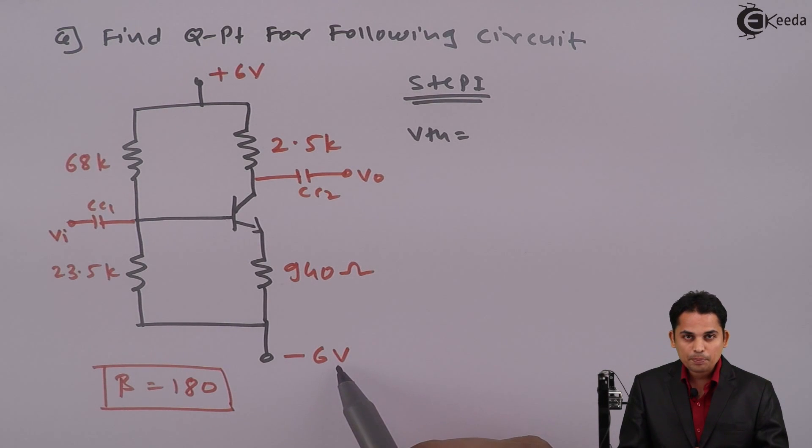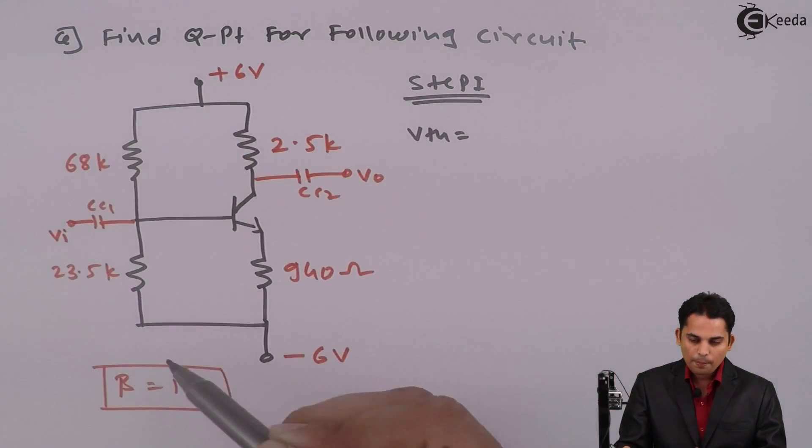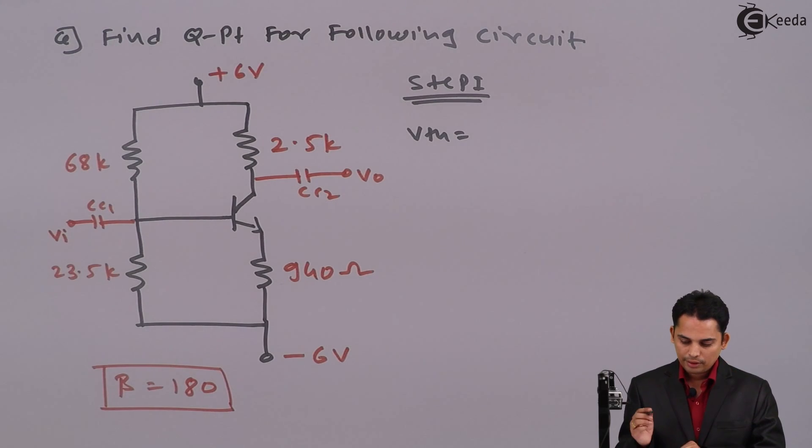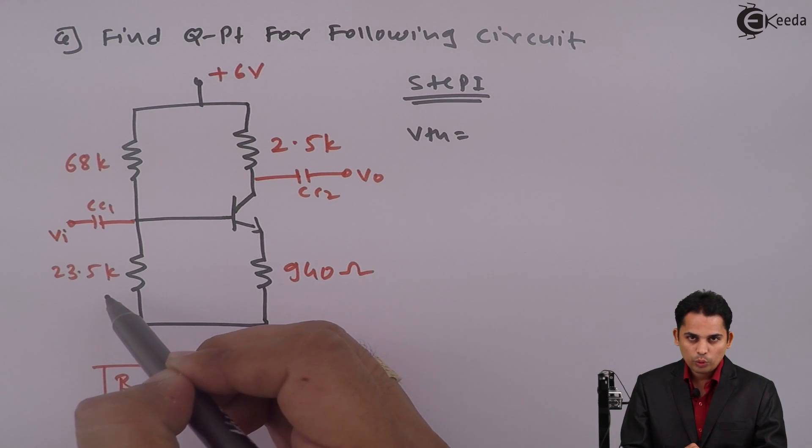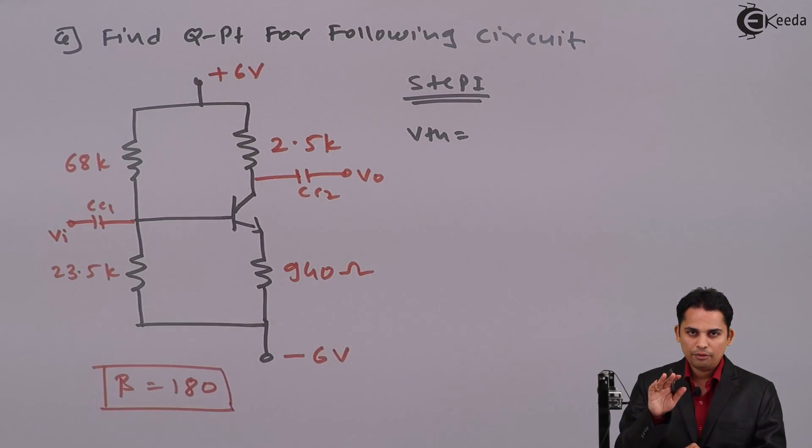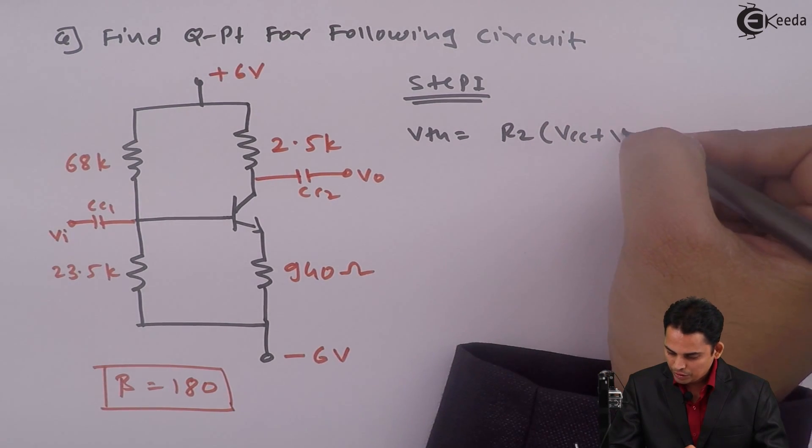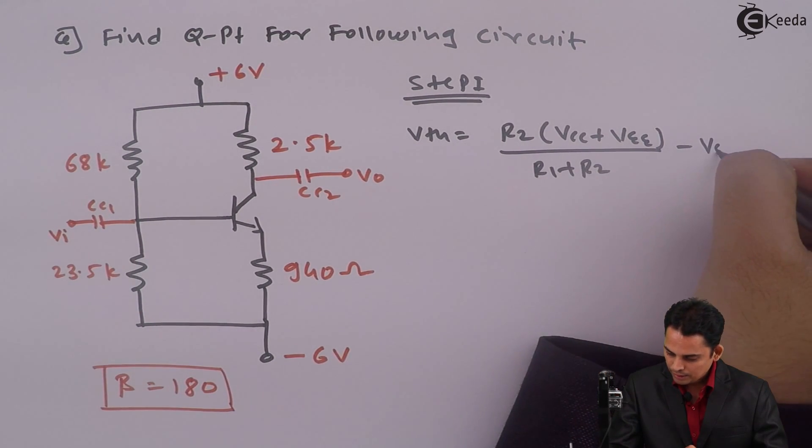But whenever this battery is present, equation of VTH will become VCC plus VEE multiplied by R2 divided by R1 plus R2 and from whole term subtract the second battery. I will write that this is R2 multiplied by VEE multiplied by R1 plus R2 divided by R1 plus R2 minus VEE.